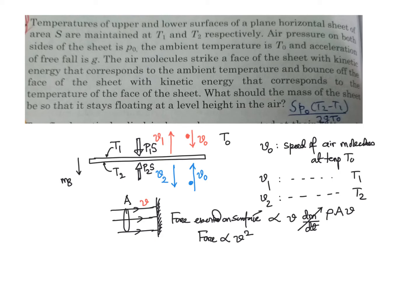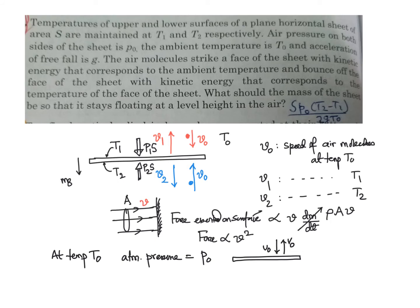Now, for atmospheric pressure: at temperature T0 the atmospheric pressure equals P0. This means molecules of air strike at velocity V0 and get reflected, bouncing off at the same speed V0. So the atmospheric pressure P0 is proportional to V0².